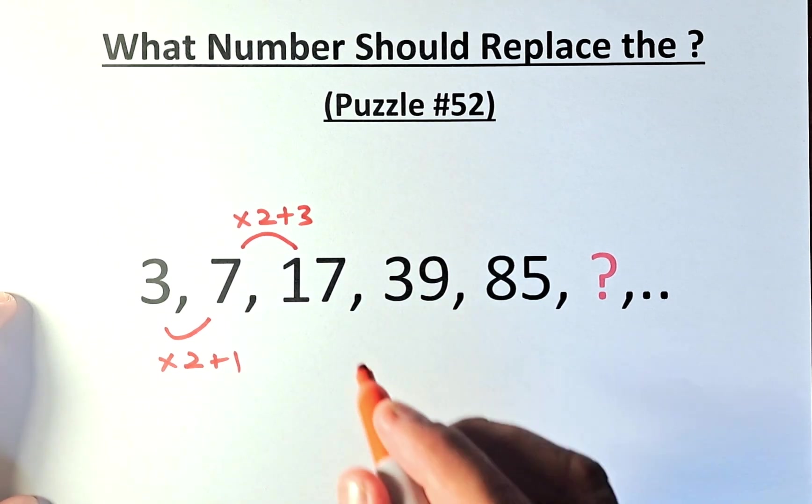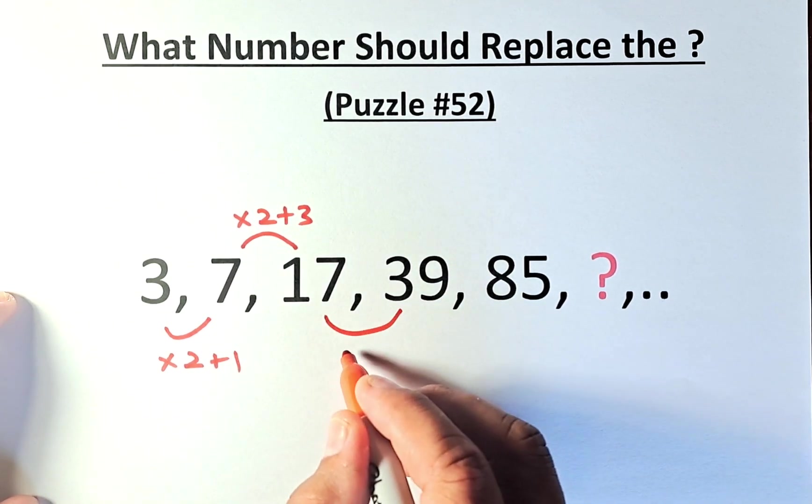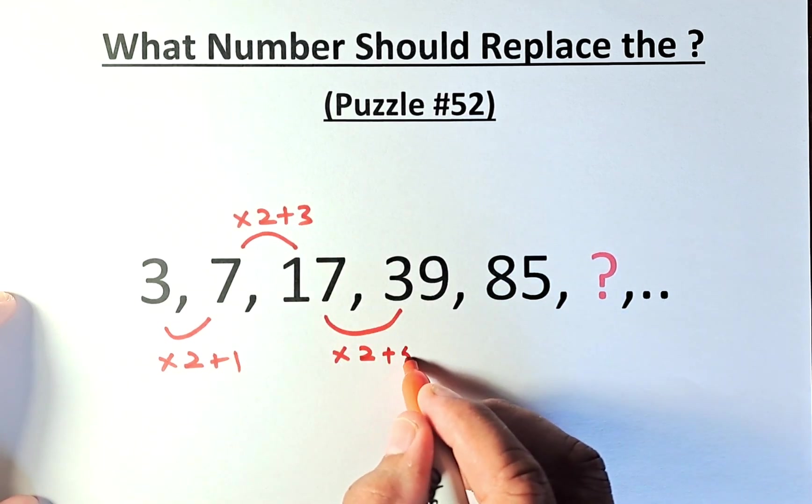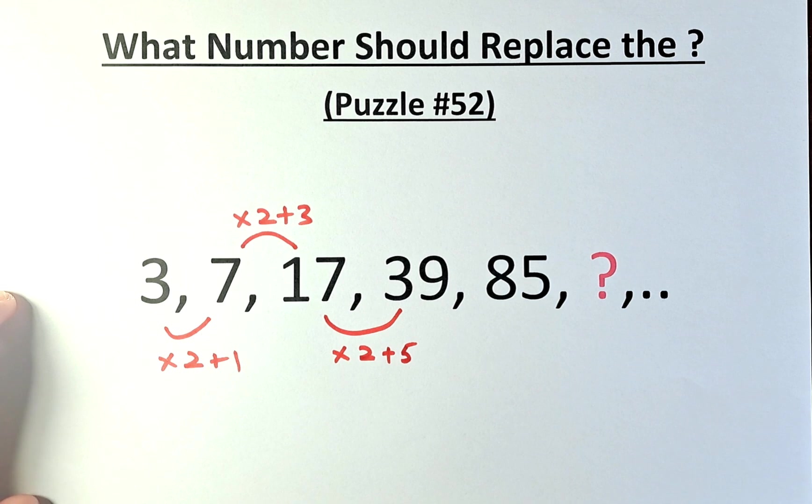From 17 to 39, we know the pattern now. It's going to be multiplied by 2, then add 1, add 3, so the next number will be 5. 17 times 2 is 34. 34 plus 5 is 39.